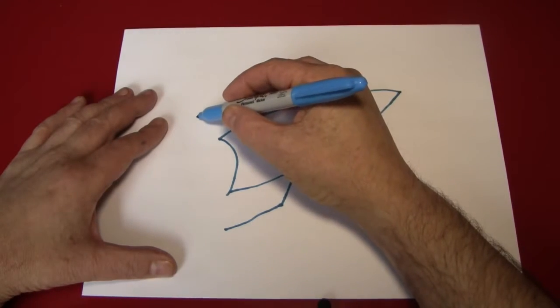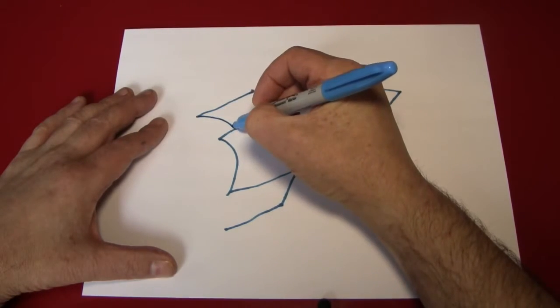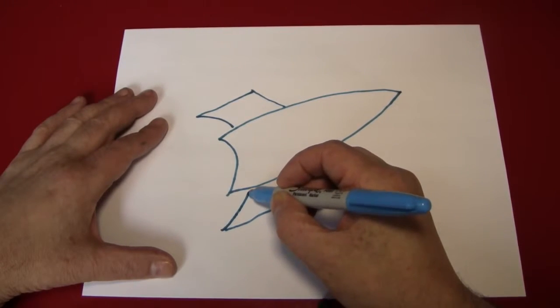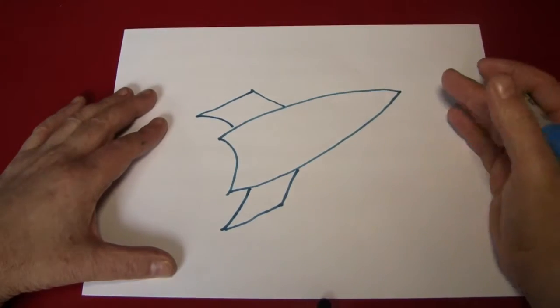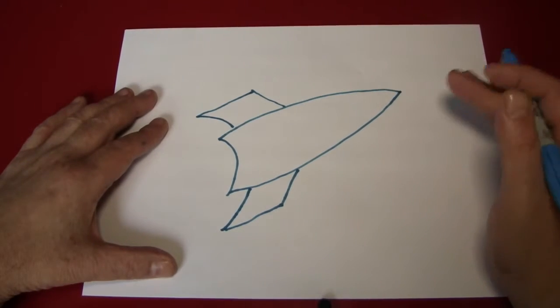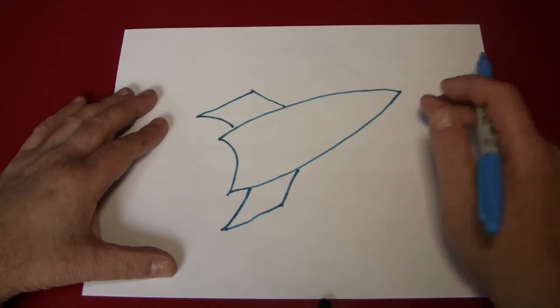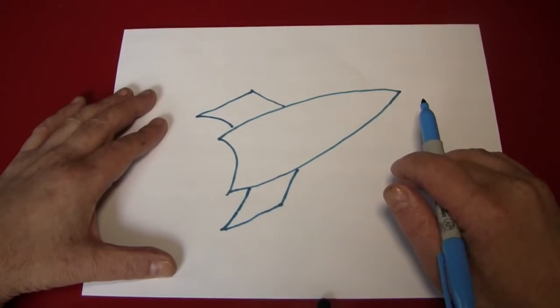And then bring these rudders back in with curved lines. Now I'm doing this while I'm talking and from behind the camera, so it's not coming out as well as it ordinarily would. But you're getting the general idea, I hope.